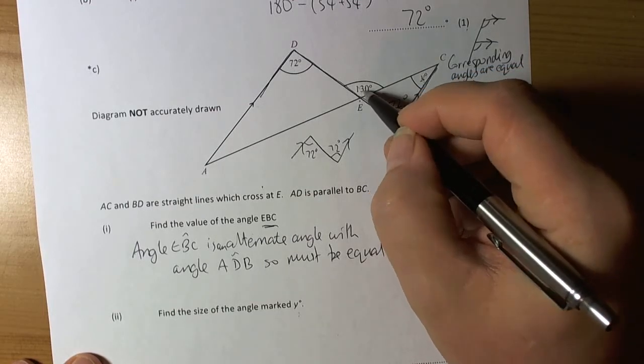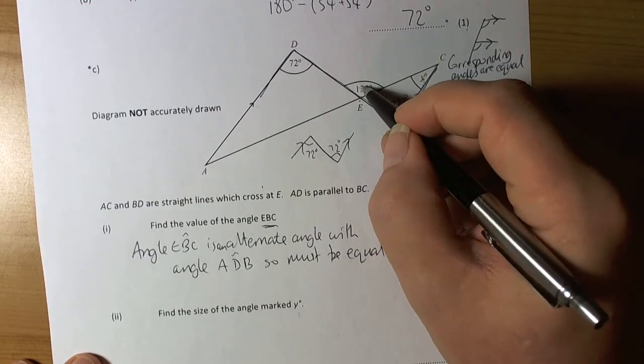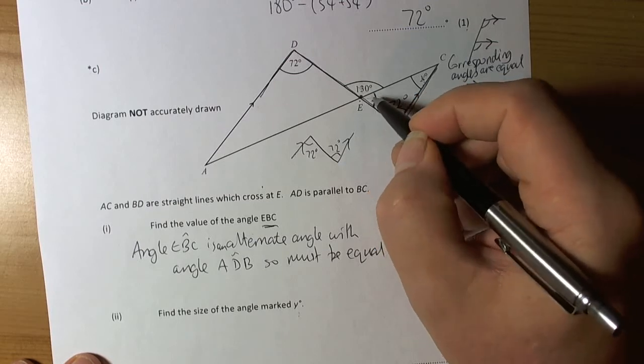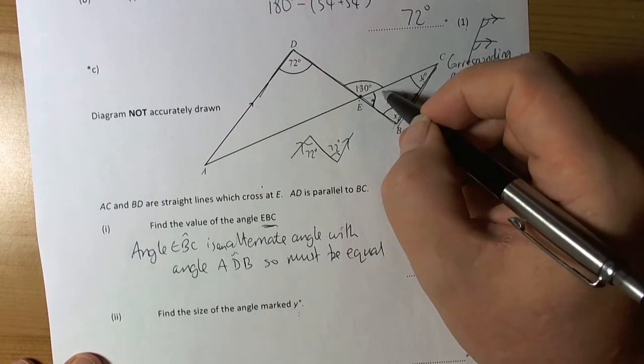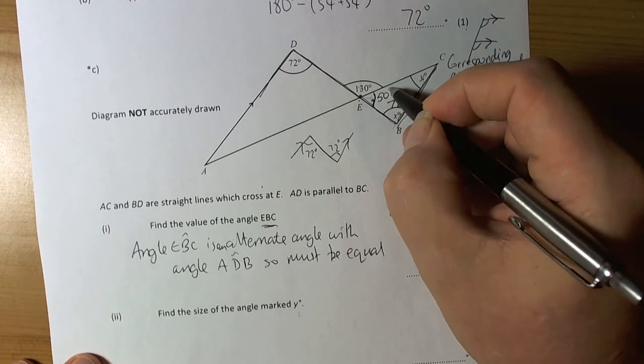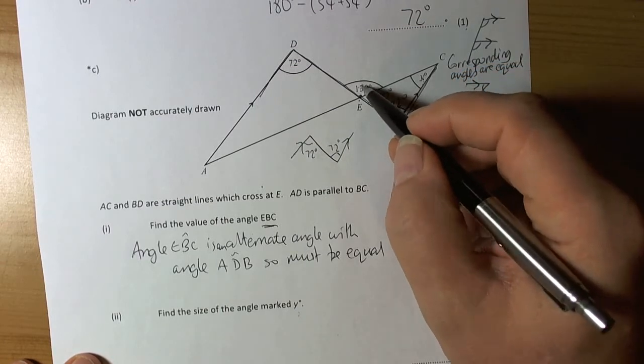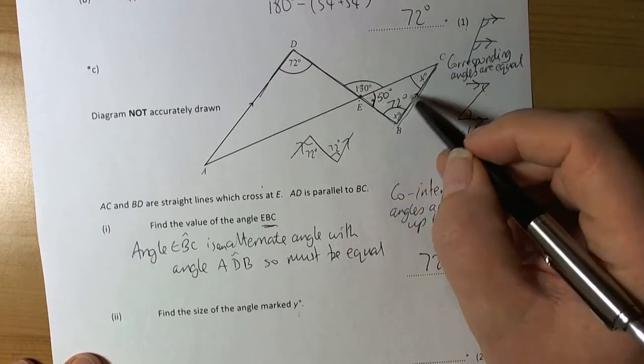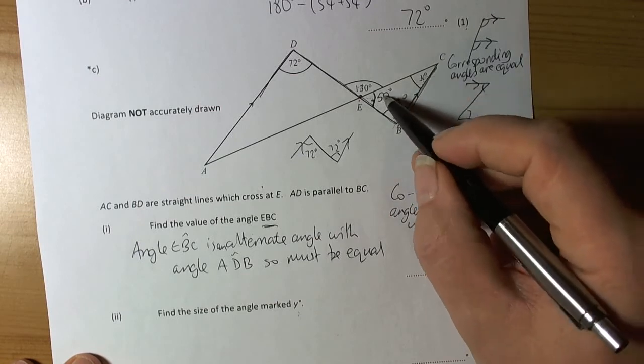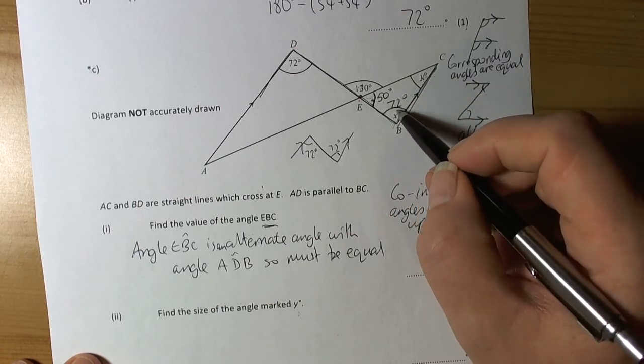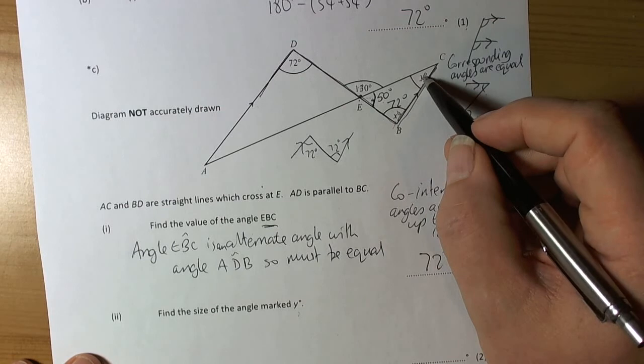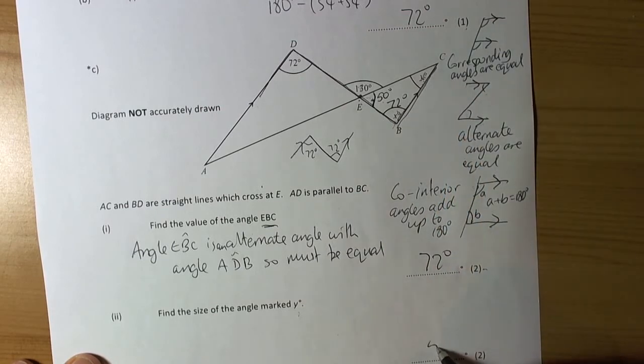And so therefore it would be nice if we knew what this angle is, because then we can get that one. Well, we do know what this one is, because we've got another situation where we've got angles on a straight line that meet at a point, add up to 180. So this angle here must be 50 degrees. 130 plus 50 makes 180. And therefore we can work out what Y is, because we know these two angles added together is 122. Take it away from 180, then we end up with 58 degrees.